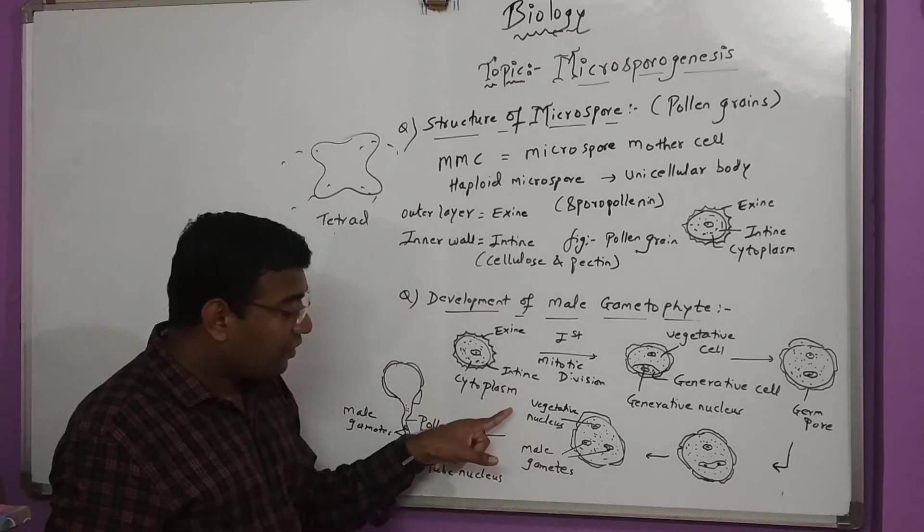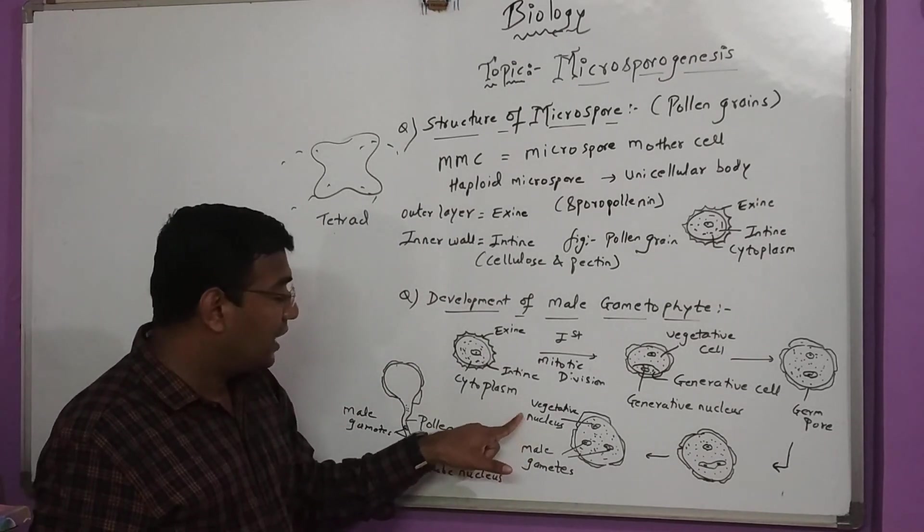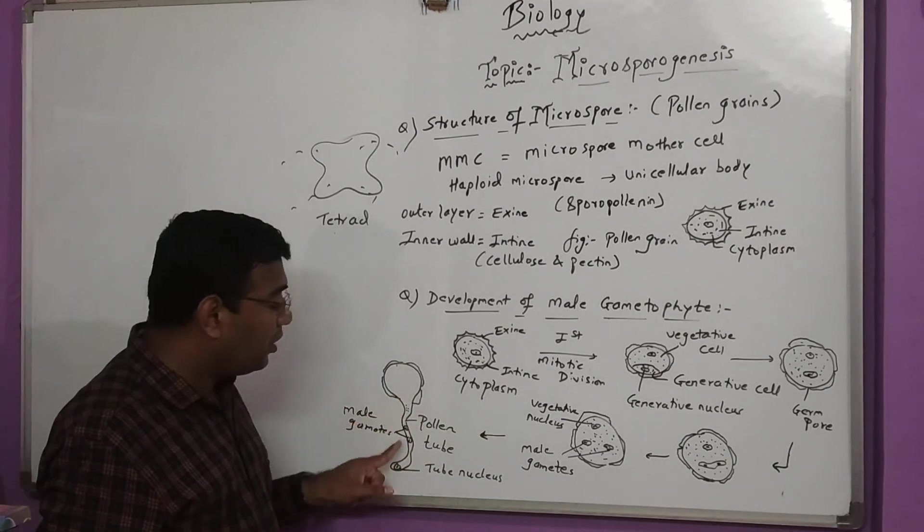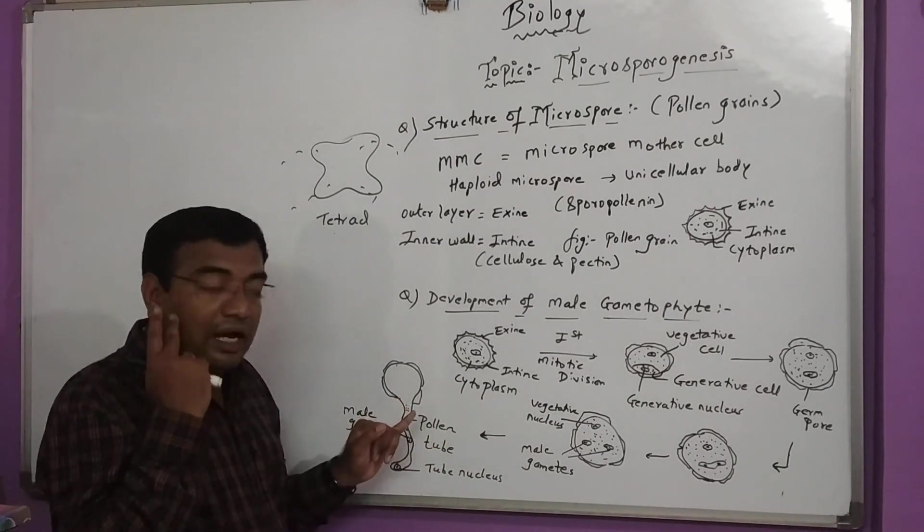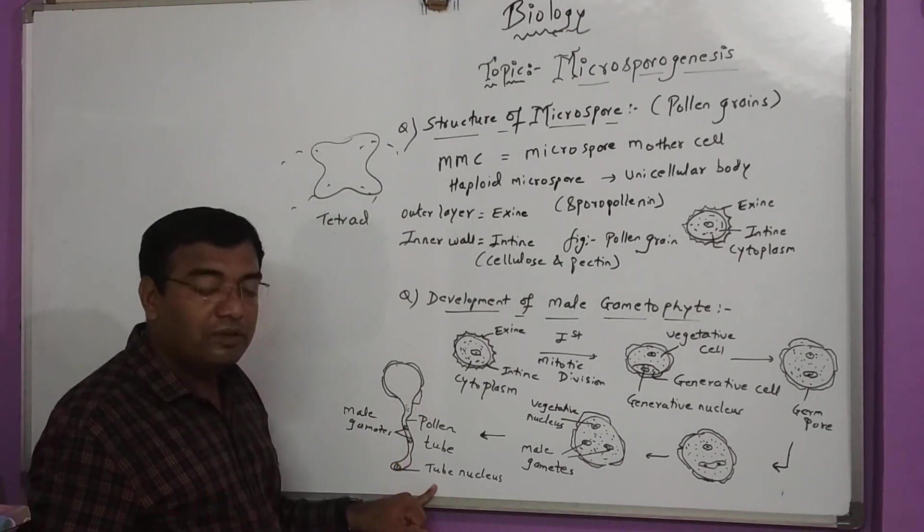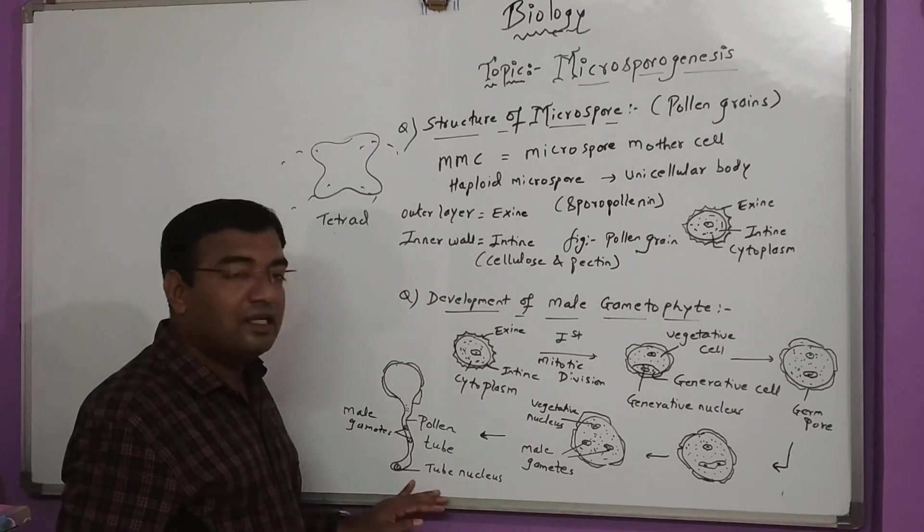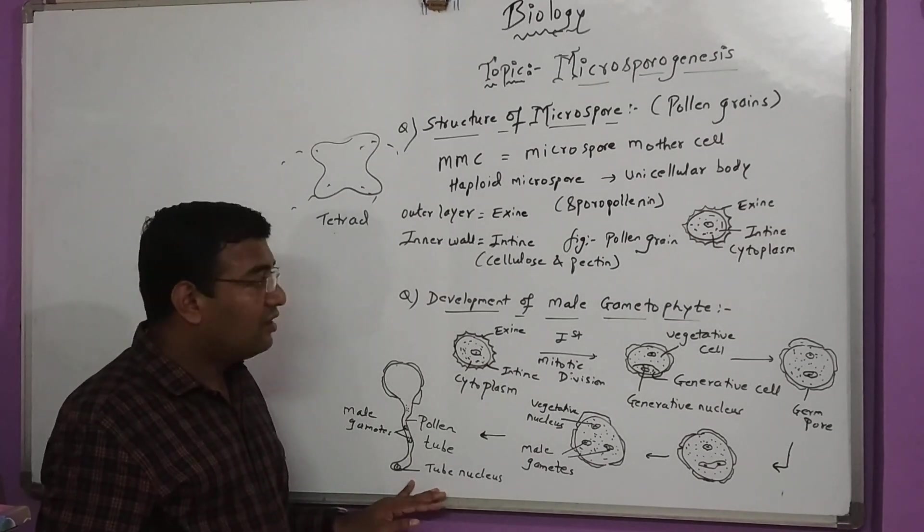In the next stage, a vegetative nucleus is formed. The vegetative nucleus enters the pollen tube and develops into the pollen tube nucleus. These cells are further transferred in the fertilization stage. Thank you.